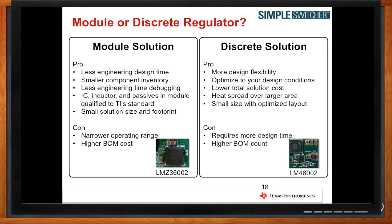For a discrete solution, there's definitely more design flexibility and you're able to optimize your design conditions. There's a lower total solution cost because you are designing your own discrete. And because it's a discrete solution, the heat is able to spread over a larger area. You'll also get a small size with an optimized layout, and in the data sheet you'll see the optimized solution to still get that small solution size. Some cons: it does require more design time because you have to calculate the inductor value, configure your external circuit, and you'll have a higher BOM count.